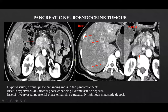This was a case of pancreatic neuroendocrine tumor, where we can see a hypervascular enhancing mass in the arterial phase in the pancreatic neck. This was also associated with multiple hypervascular enhancing lesions in the liver, as well as a paracaval lymph node metastatic deposit.